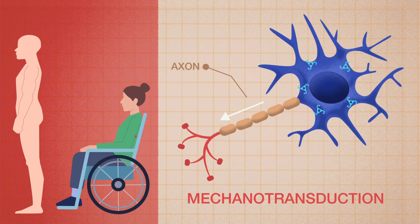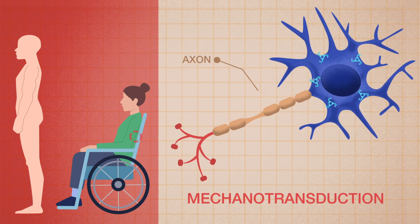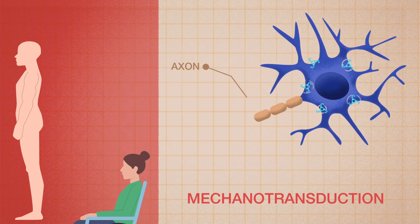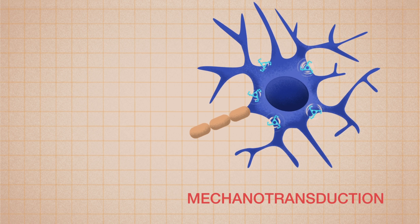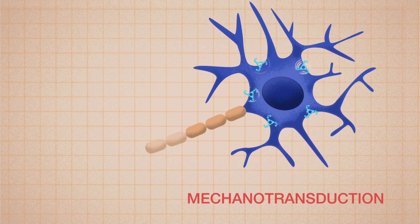But when axons are damaged, for example, by a traumatic spinal cord injury, something strange happens. The PIEZO receptors become more active and prevent injured axons from regrowing.